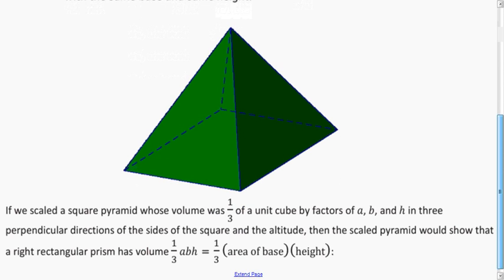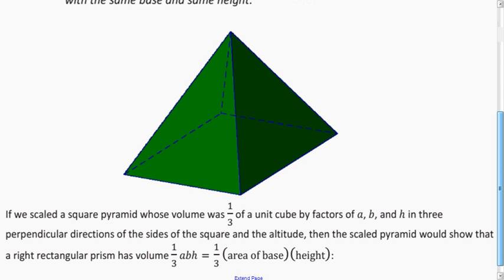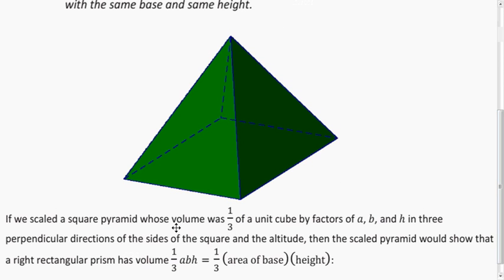And if we apply what we learned about scaling in different directions and talk about rectangular pyramids, we would scale in one direction by a and the other by a for the base. We still have the height that we just calculated, giving us one-third the area of the base times the height.